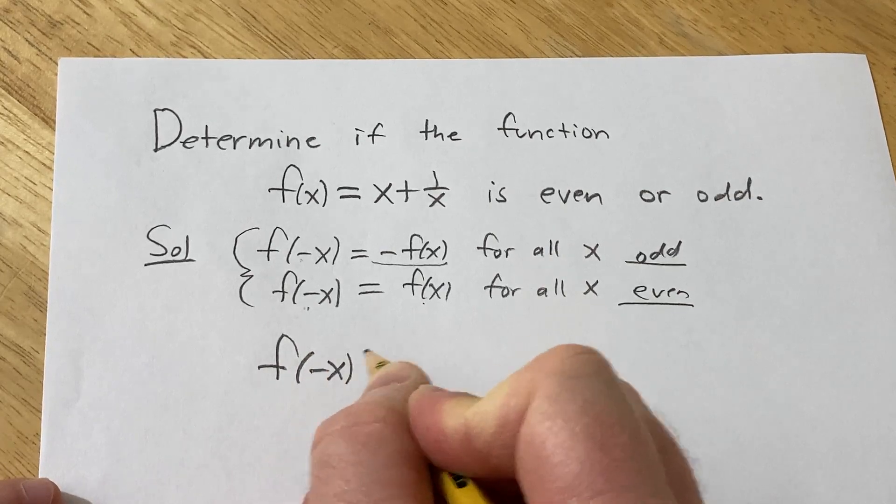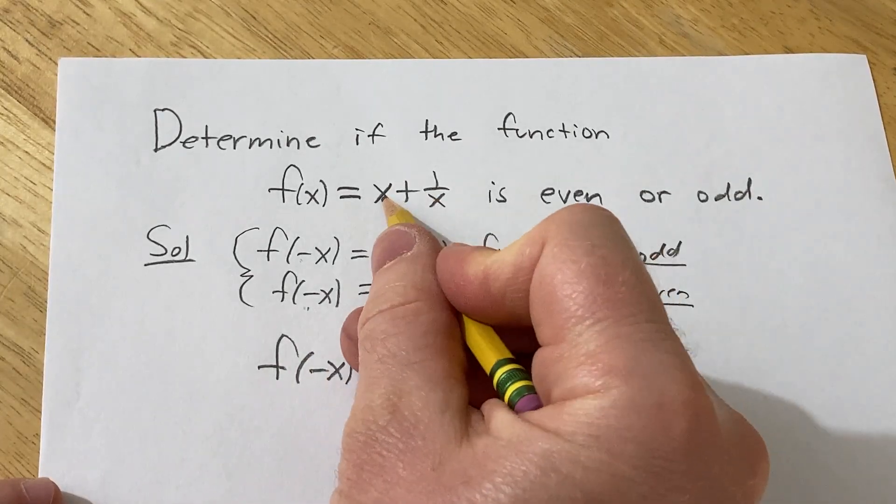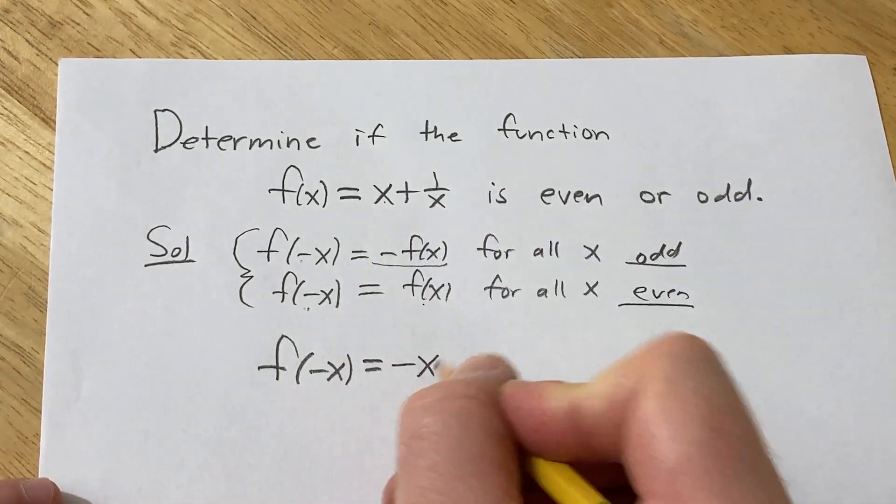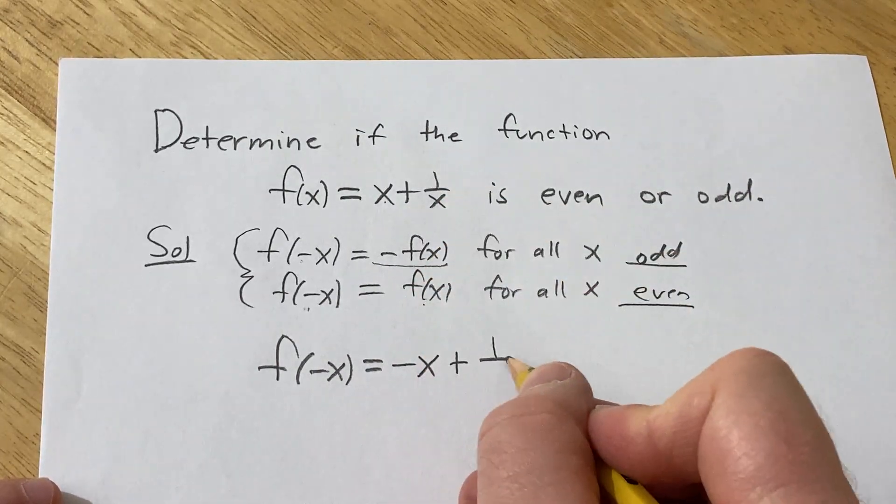So f of negative x is equal to... instead of x, we have negative x, plus instead of x, we have negative x.